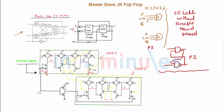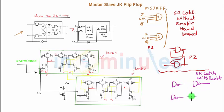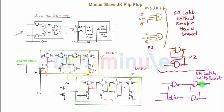Now let's do part three of my diagram. It's an SR latch with an enable signal, NAND-based: NAND, followed by another NAND, followed by another NAND, where this is one input, this is clock or enable, and this is another input. The output goes here, and the second input is the output from the previous stage. The same applies to the other NAND as well. So this is my SR latch with enable signal.